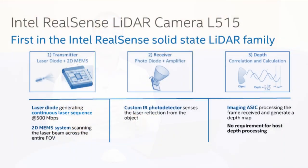The L515 uses time-of-flight technology to understand how far objects are away from the camera. A lot of time-of-flight cameras use a flash-based method — a single flash of light is sent out and a standard camera sensor is used to receive that light information. The L515 doesn't work in that manner; it uses a scanning LiDAR for its time-of-flight, and there are a few advantages to operating time-of-flight in this manner.